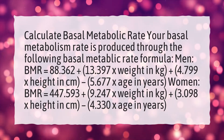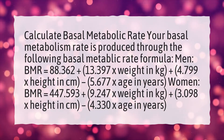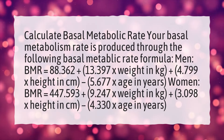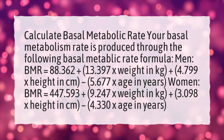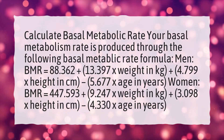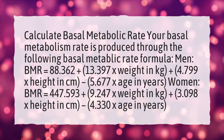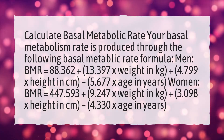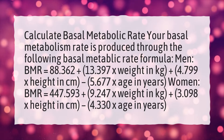Your basal metabolism rate is produced through the following basal metabolic rate formula. Men: BMR equals 88.362 plus 13.397 times weight in kilograms, plus 4.799 times height in CM, minus 5.677 times age in years.